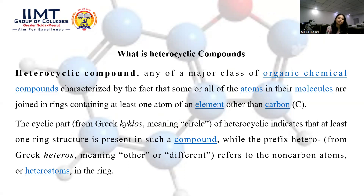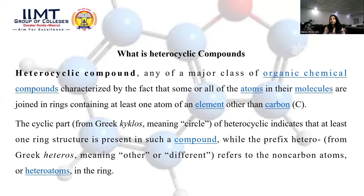Heterocyclic compounds themselves contain a suffix and a prefix. For example, the prefix is 'hetero.' Prefix means the first part of a word. 'Hetero' means different — meaning we are not using carbon or hydrogen in the ring, but a different element in place of carbon and hydrogen.